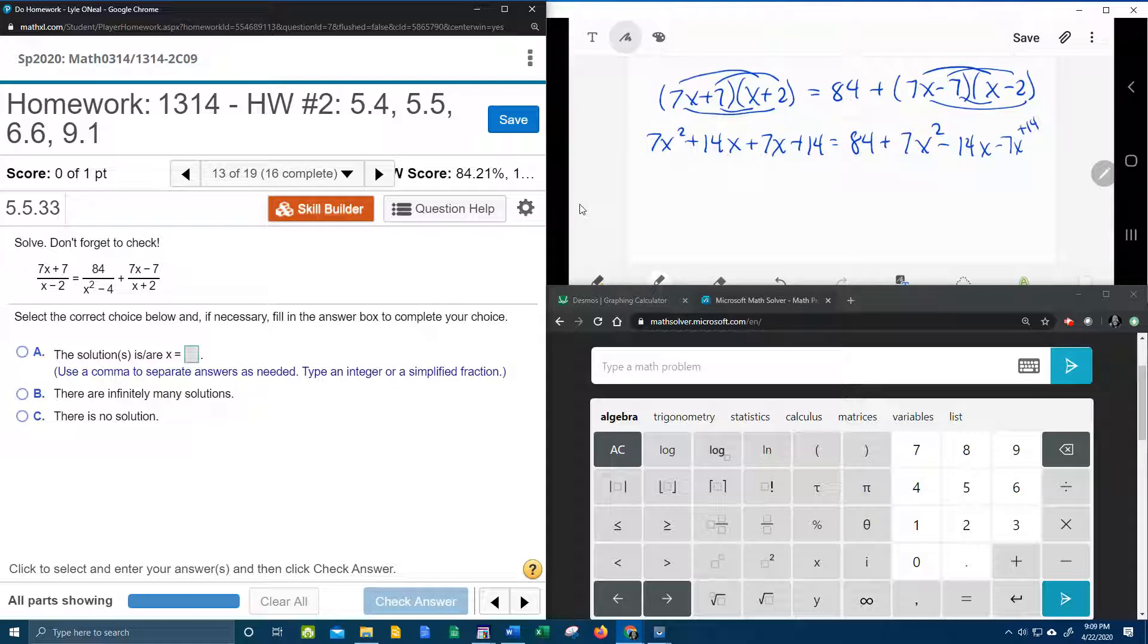Alright, so now let's combine like terms. We've got 7x squared, 14 and 7, that's plus 21x, plus 14. On the other side, we've got 7x squared, negative 14x, and a negative 7x, that is negative 21x. And we have 84 plus 14, that is 98.